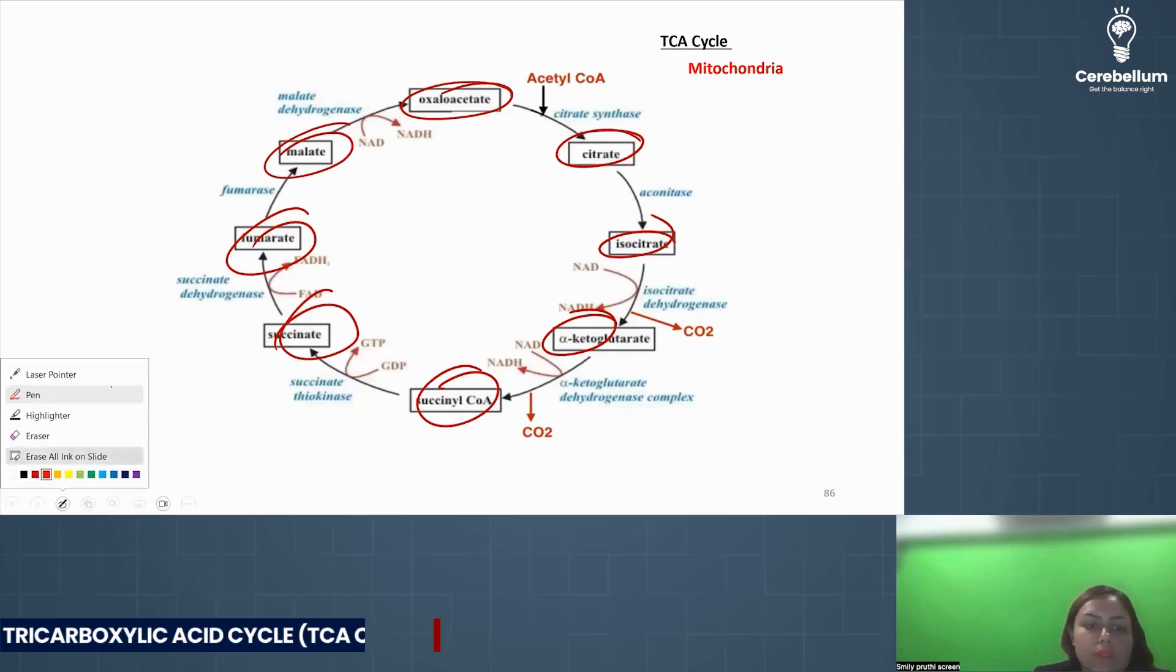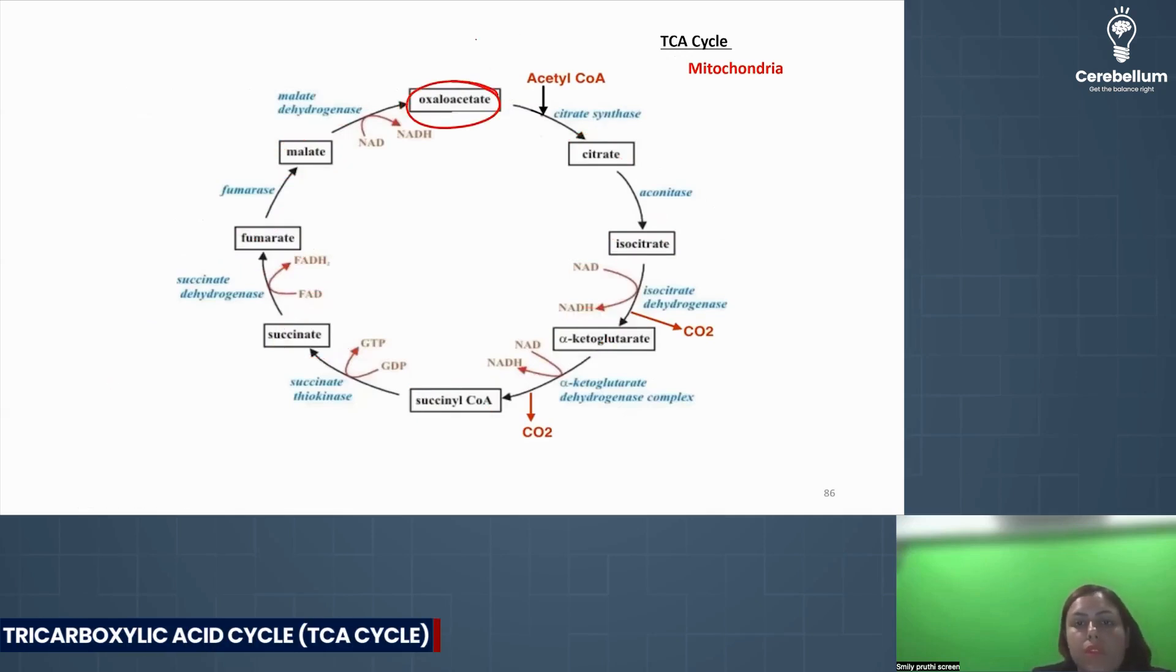Let's do the pathway. Oxaloacetate is 4 carbon. Acetyl CoA is 2 carbon. So we get 6 carbon citrate. Enzyme is citrate synthase.